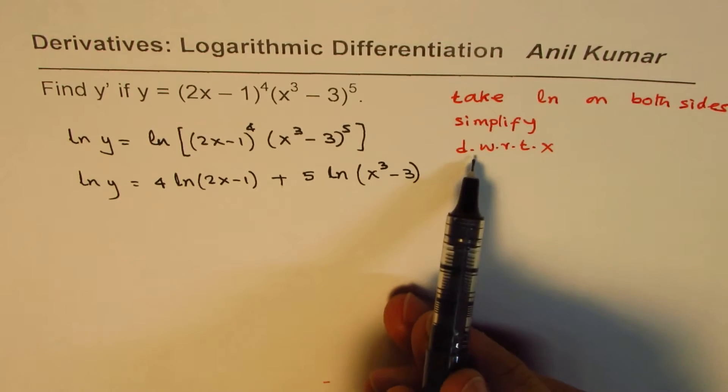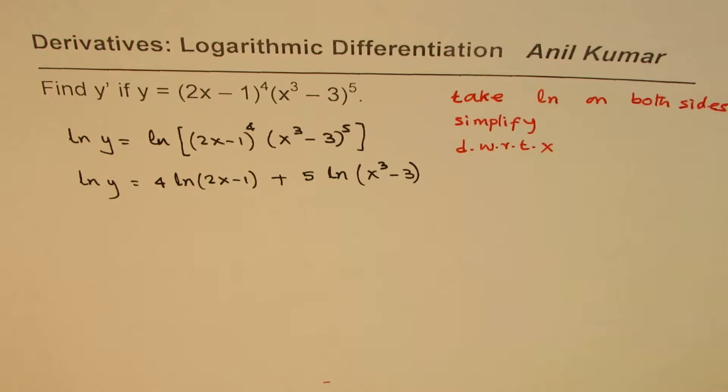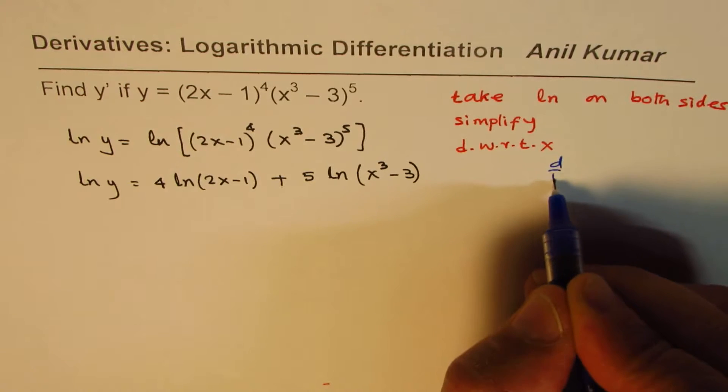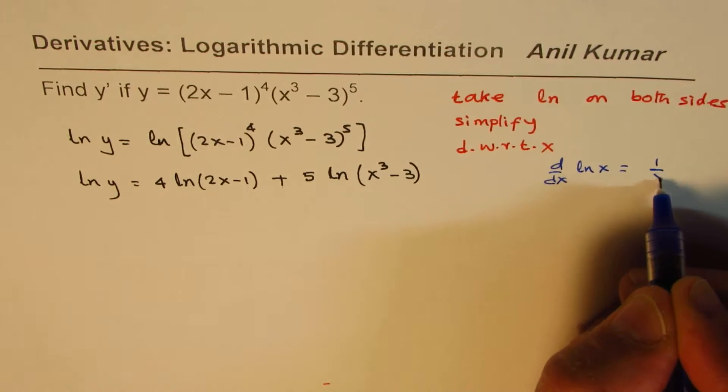we will take derivative with respect to x on both sides. Now, what is the derivative for ln y? Let me write d/dx of ln x. That will be equals to 1 over x.